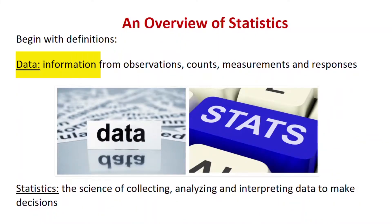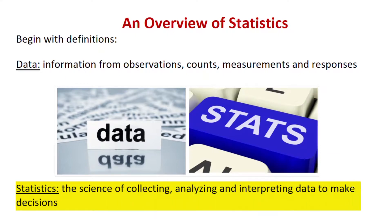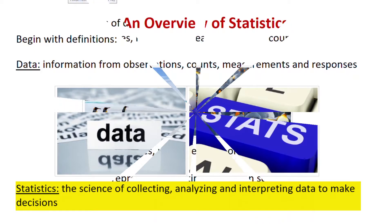So we're going to start with definitions. Data is information that we get from observations, counts, measurements, and responses. Statistics uses that data. It's the science of collecting, analyzing, and interpreting the data, which we then use to make decisions.